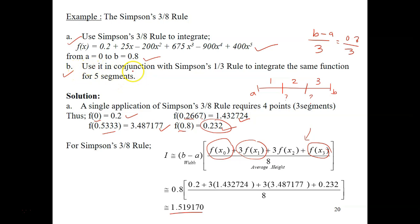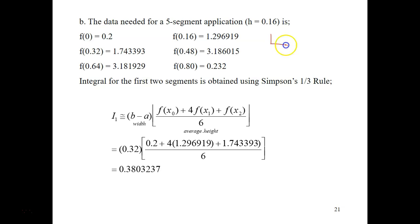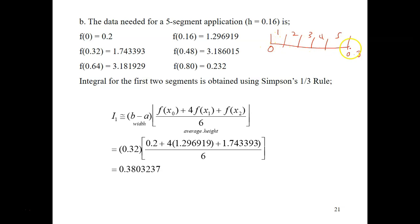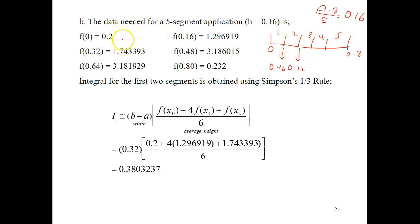Now let's look at part B: use the 3/8 rule in conjunction with the one-third rule to integrate the same function for five segments. Identify the six points between 0 and 0.8 divided into five equispaced segments. The step size is 0.8 divided by 5, giving 0.16 per segment. The first point is 0.16, the second is 0.32, and so on, adding 0.16 each time. You will be working with these six points.